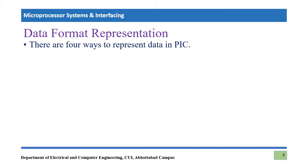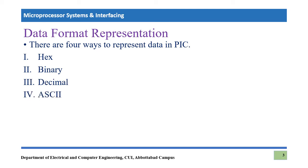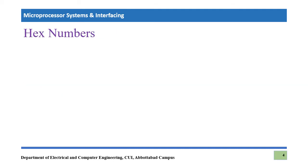Now let's talk about data format representation. Though we have only one data type, we have four different ways to represent data in PIC 18. Those representations or formats include hexadecimal, binary, decimal, and ASCII — these are the four different data formats which can be used in PIC 18F microcontroller.